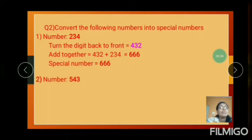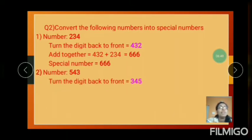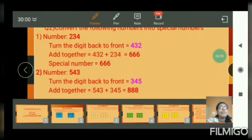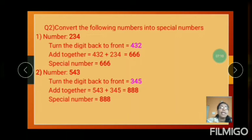And next number: 543. Turn the digit back to front — the reversed number is 345. Add together: 543 plus 345 equals 888. So the special number is 888.